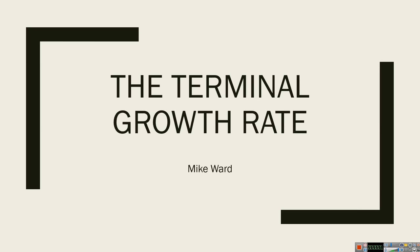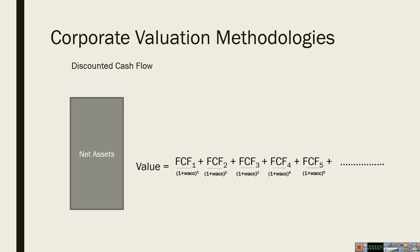Hi, this is Mike Ward. I want to talk to you about the terminal growth rate. You will know that one of the main methods of valuing companies is the discounted cash flow method. The basic idea is that although there are machines and buildings and other assets in a business which the accountants keep track of, they tend to use things like historical value to value these assets and are conservative in their estimates. But shareholders know that it's not the assets themselves that are worth anything — it's the future cash flows which will come out of these assets in time.